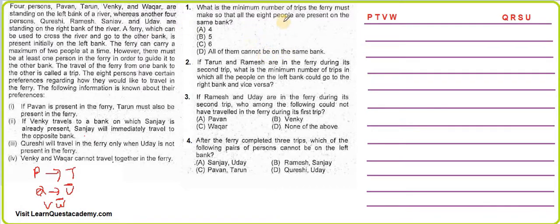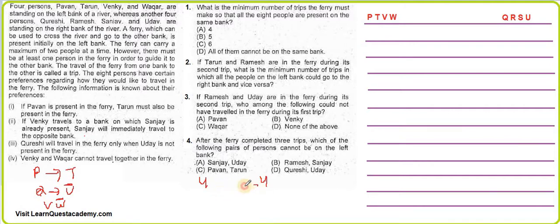The first question asks: what is the minimum number of trips the ferry must make so that all eight people are on the same bank? Let's take the ideal case — forget the conditions for now. The best possibility: two go from left to right on trip one, so it becomes two on left and six on right, since the ferry starts on the left.